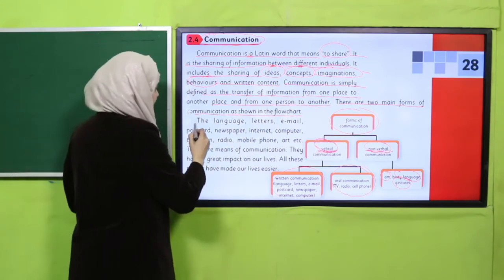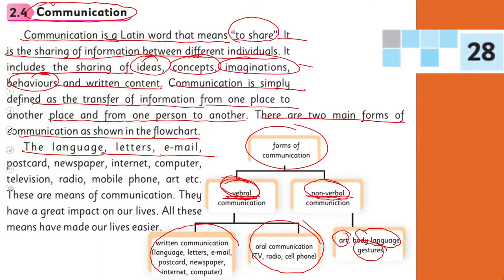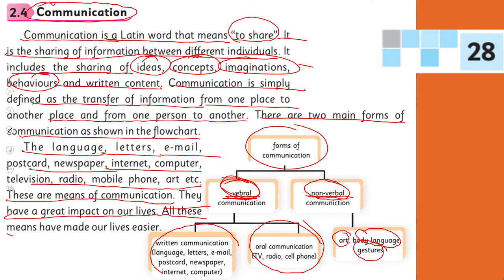The means of verbal communication include language, letters, email, postcard, newspaper, internet, computer, television, radio, mobile phone, art, etc. These all are means of communication and they have a great impact on our lives. All these means have made our lives easier. Flowchart ke accordingly humne different means of communication dekh li hain.